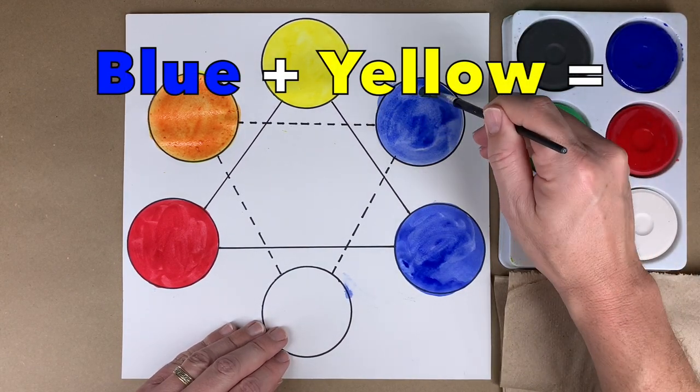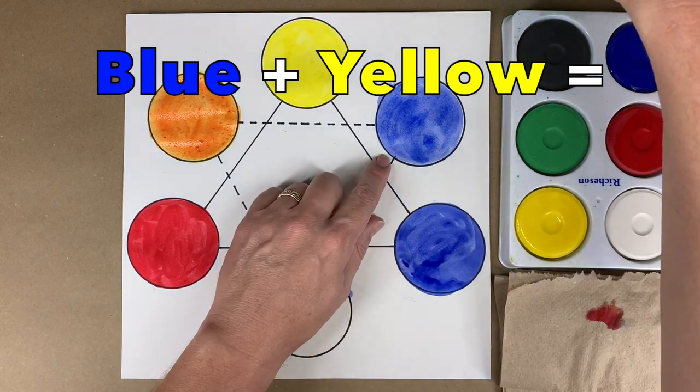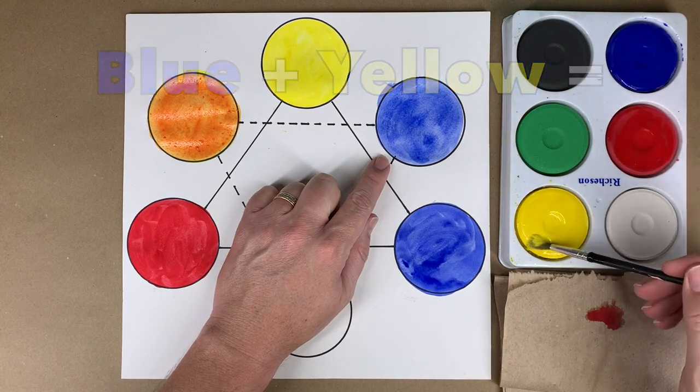So we have blue, now we have to add some yellow to it. Get your yellow. You're going to need a lot of yellow on that brush.